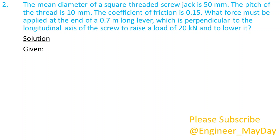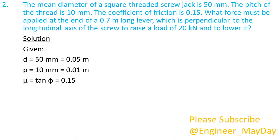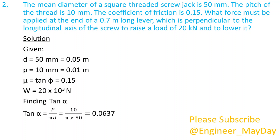Given: D equals 0.05 meters, P equals 0.01 meters, mu equals 0.15, W equals 20 times 10 to the power 3 newtons. Finding tan alpha, which equals 0.0637.